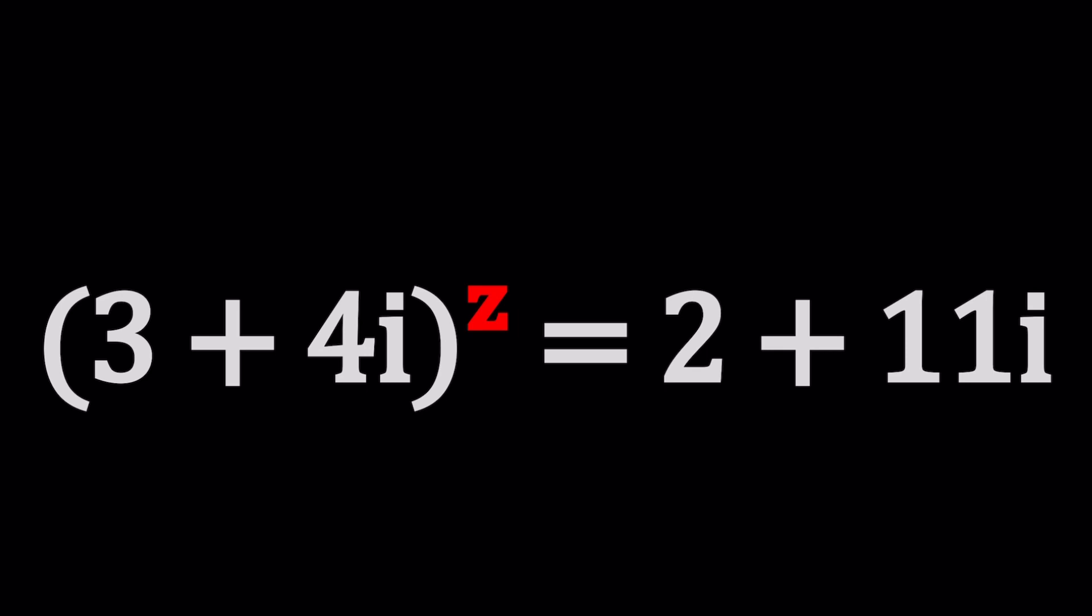Maybe complicated too, but don't worry, we'll be able to solve it. So we have 3 plus 4i to the power z equals 2 plus 11i. And we're supposed to find the value of z that makes this equation true. In other words, you take a complex number and then you raise it to a complex power. You get another complex number. What is the complex number used in the exponent? It's kind of like a really complex question, don't you think?